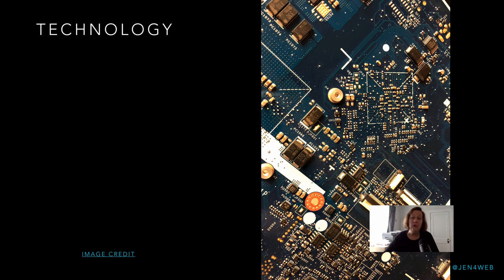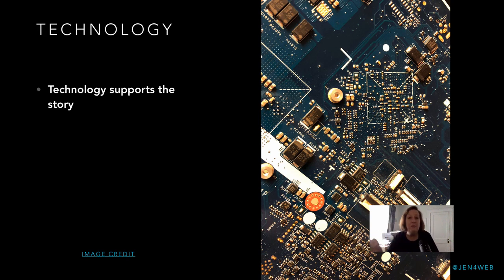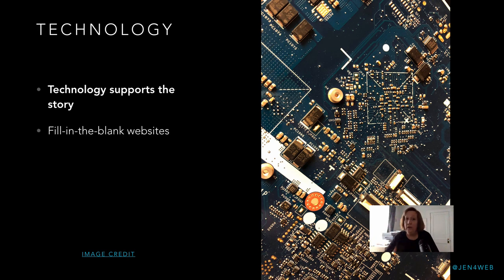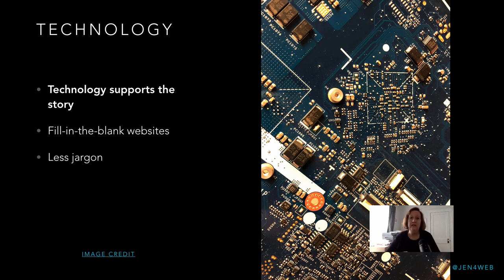Technology is the second part. Once you actually have the story in place and you know all the things you need to say, then you should look at the technology. The technology should support the story — the story is going to drive all the technology decisions you're going to make. When technology leads and the story follows, you'll wind up very, very badly. The fill-in-the-blank website concept is not the way to go; we need to get people thinking about all of that stuff before they start clicking and filling things in.